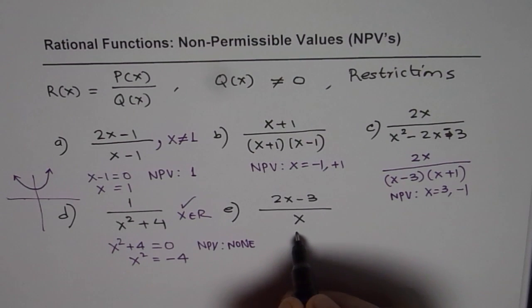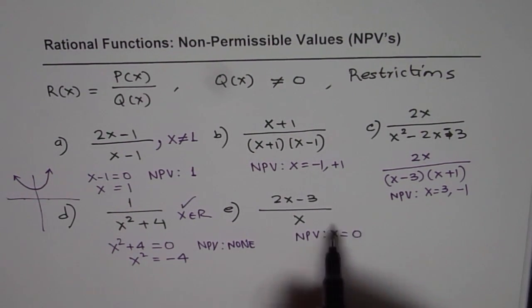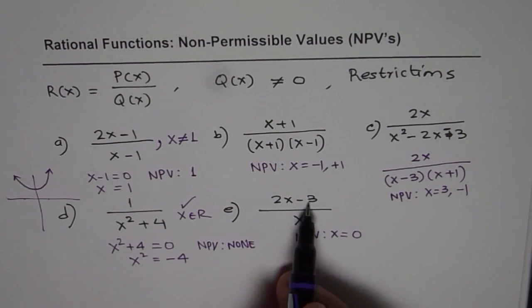Now here the non-permitted value will be x equals 0, since if I put 0 here we are dividing by 0.